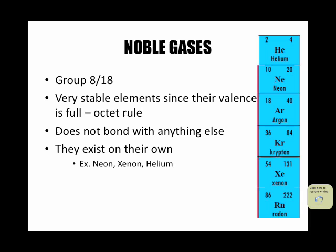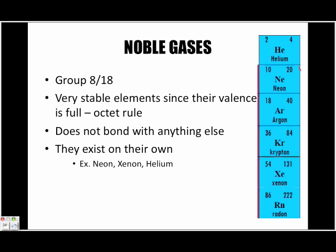The very last group to the right of the periodic table are called the noble gases. They are part of group eight or 18, and include helium, neon, argon, krypton, xenon, and radon. They are very stable elements since their valence shell is full. They fulfill something called the octet rule, meaning a full set of eight electrons. Helium is the only noble gas that does not have eight valence electrons — it actually has only two valence electrons.